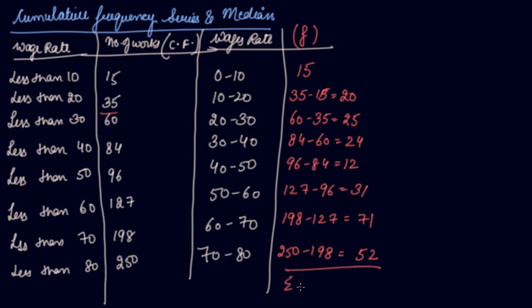So when you will do the sum, summation F, it will be 250. So your formula, the same formula you will put. We have arranged it in the ascending, descending order. We have found out the cumulative frequency, it was given to us. We will find out the frequency.